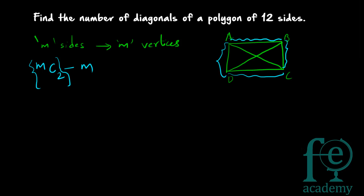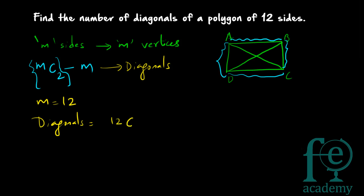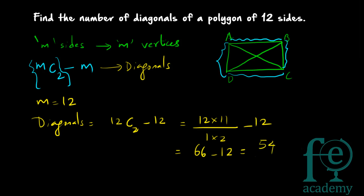Here m is equal to 12. The number of diagonals = 12C2 − 12 = (12 × 11) / (1 × 2) − 12 = 66 − 12 = 54. So there are 54 diagonals for a polygon of 12 sides. The general formula: number of diagonals = mC2 − m.